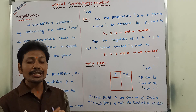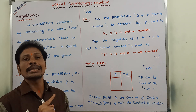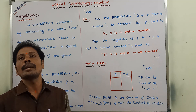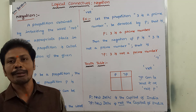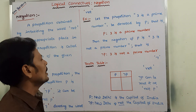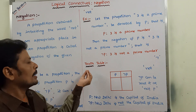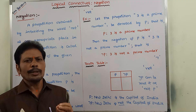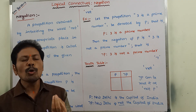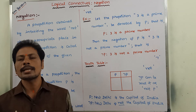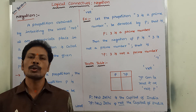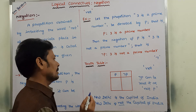Whereas conjunction, disjunction, conditional, and biconditional can be used for more than one proposition. For using the negation connective, how many propositions are required? Only one proposition is required.